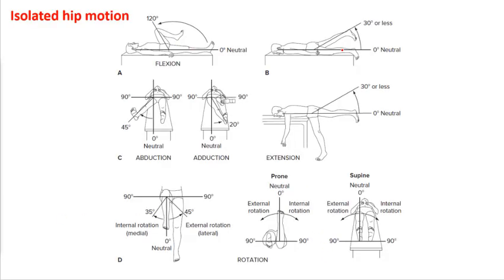These are the available motions that you have at the hip. It is a ball and socket joint so you're going to get movement from all three planes. You're going to get flexion and extension — you can see the range of motion — about 120 degrees of hip flexion, about 15 to 20 degrees of hip extension, your abduction, your internal external rotation and so forth.